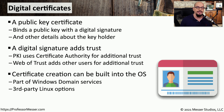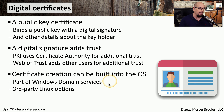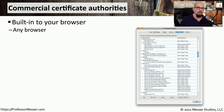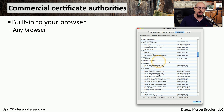There are many different ways to create these digital certificates, and if you're building out a certificate authority, you'll find that Windows Domain Services has the certificate creation process built into the operating system itself. If you're using other operating systems like Linux or Mac OS, there are many third-party options available as well. Your browser or operating system will maintain a list of all of the trusted commercial certificate authorities, and if you bring up that list, you will see there are hundreds of CAs that are part of the operating system or part of the browser you happen to be using.